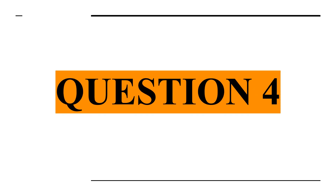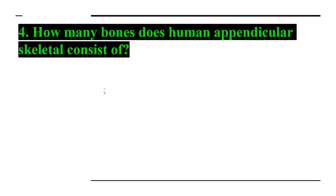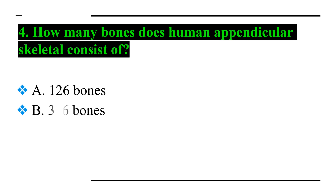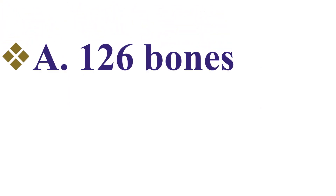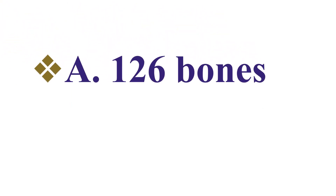Question number four: how many bones does the human appendicular skeleton consist of? Option A: 126 bones, Option B: 316 bones, Option C: 122 bones, and Option D: 216 bones. Answer number four: Option A — 126 bones.